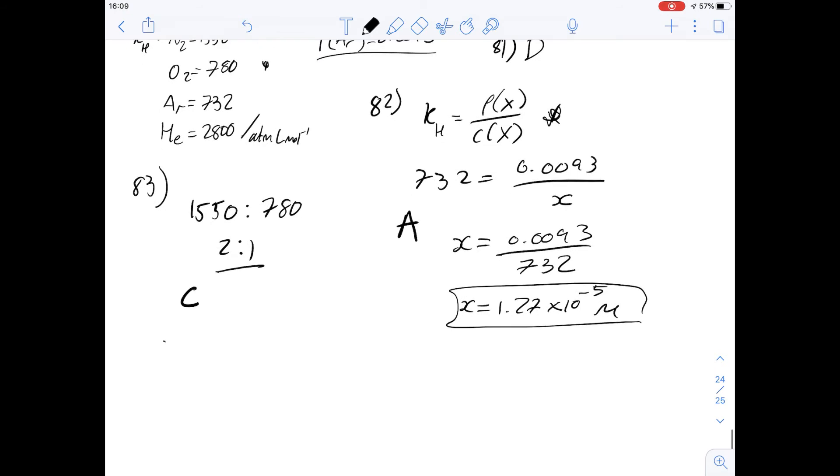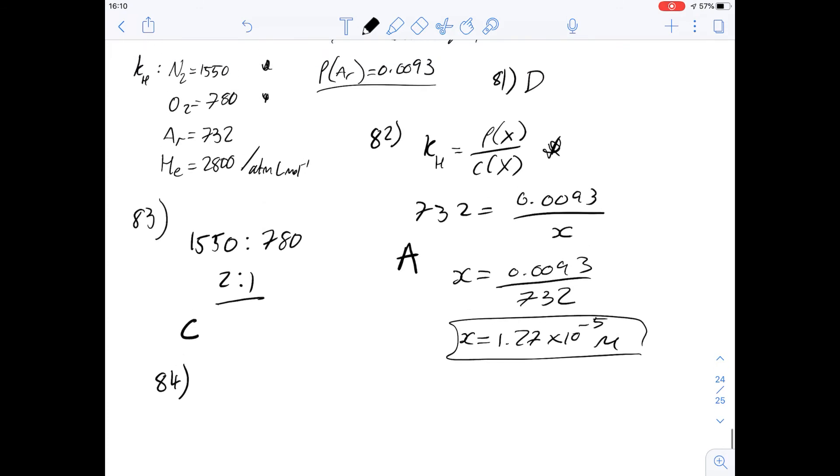If we look then at 84, it says about deep sea divers using helium and oxygen as a mix because of the solubility of helium. It says if the blood plasma of a deep sea diver was found to have equal concentrations of dissolved helium and oxygen, which of the following is the best estimate of the percentages of the gases in the mixture? So equal concentrations of each makes it a lot easier, and again we're just going to have a look at the ratio of the KH values.